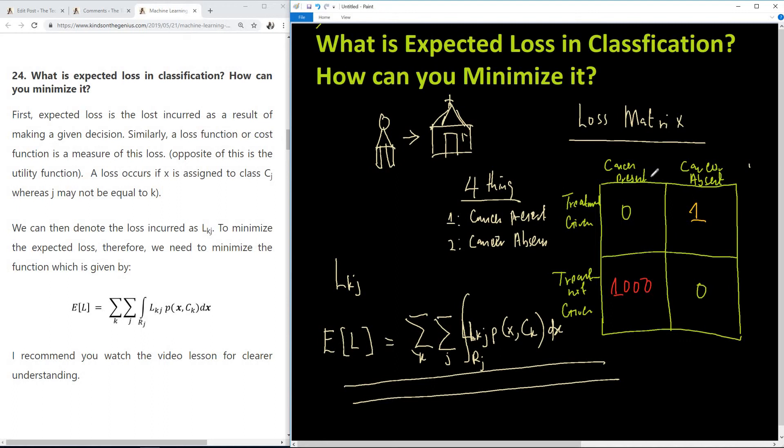And how do you minimize it? We minimize the expected loss by minimizing this function. If you have any function, you can always minimize it by setting the derivative of this function to be equal to zero.